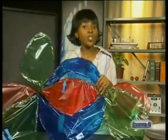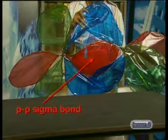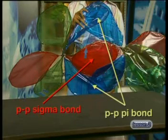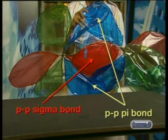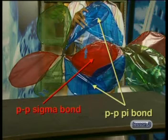So in the oxygen molecule we have two covalent bonds: the first, a p-p sigma bond, and the second, a p-p pi bond. Pi bonds cannot form on their own — they always form after sigma bonds as the second or third bonds.